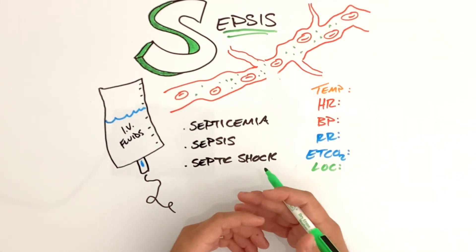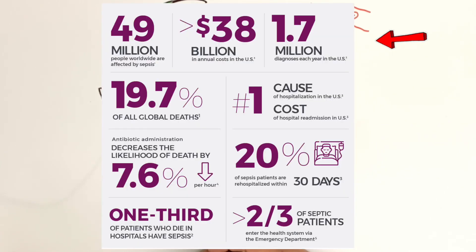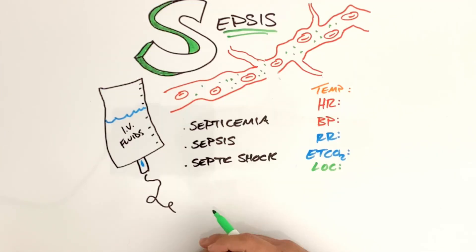So sepsis is a very lethal dysfunction in the body system that if treated appropriately and quickly, hopefully we can increase patient survivability and decrease the mortality rate in these patients. 1.7 million Americans are diagnosed with sepsis each year and if it goes untreated, it can lead to death.